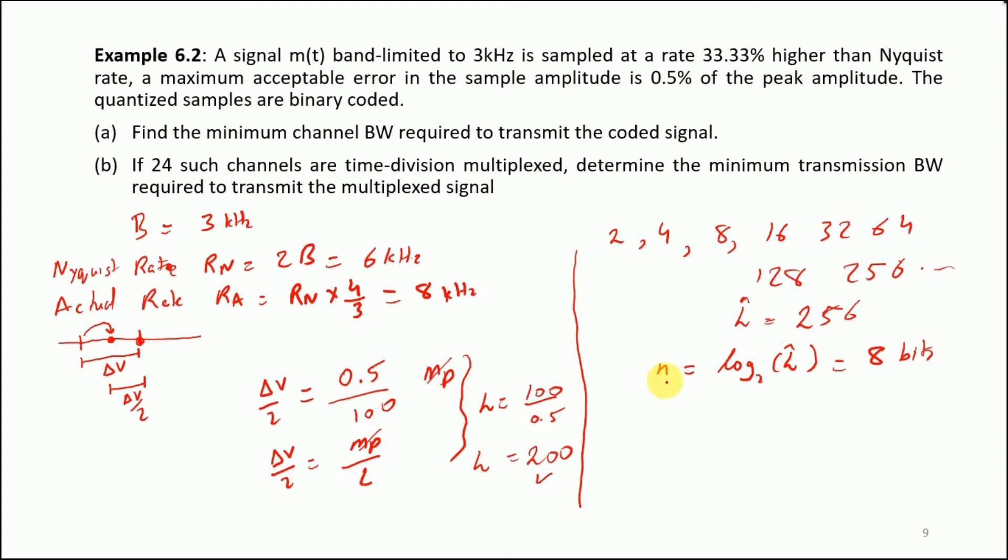For an n-bit quantizer operating at an actual rate which is higher than the Nyquist rate, and the actual rate is 8 kilohertz, the capacity would be simply C, which is n times Ra, so this is 64 kilobits per second. The question is: find the minimum channel bandwidth required to transmit the coded signal. For that we said that for 1 Hertz it can transmit 2 bits per second. Hence the transmission bandwidth BT would simply be C/2, and this is equivalent to 32 kilohertz.